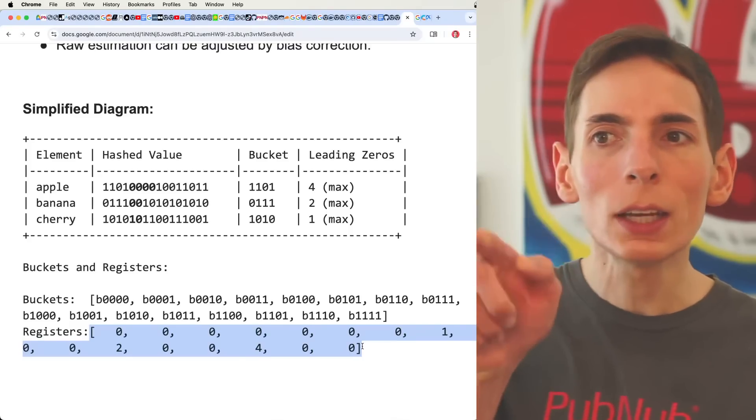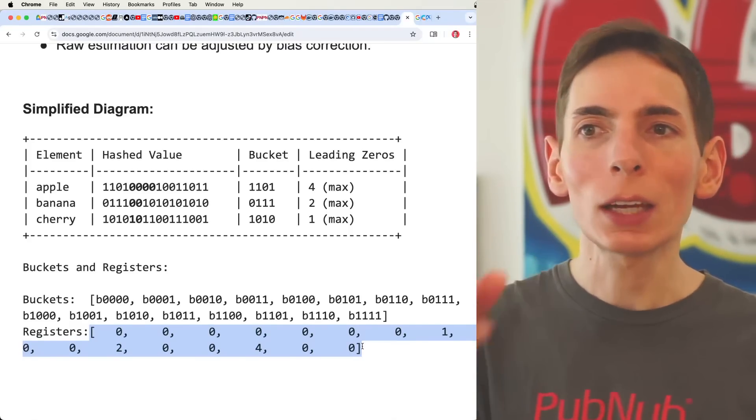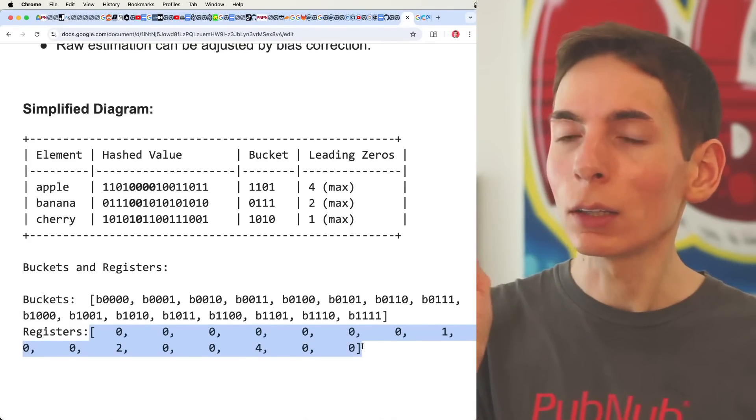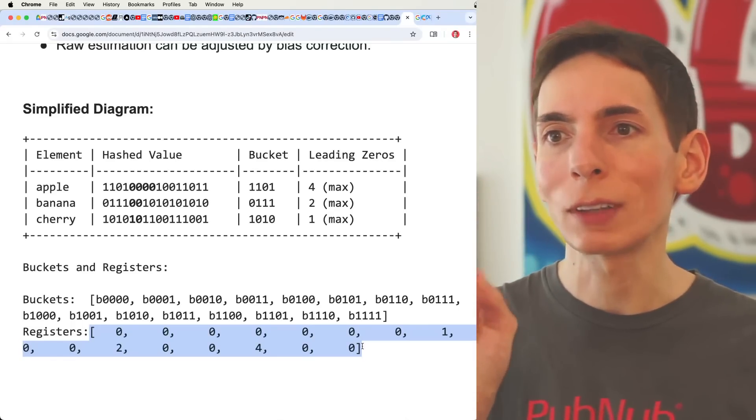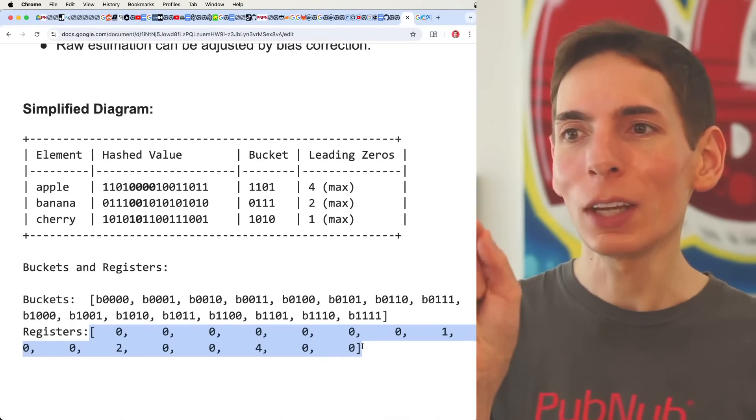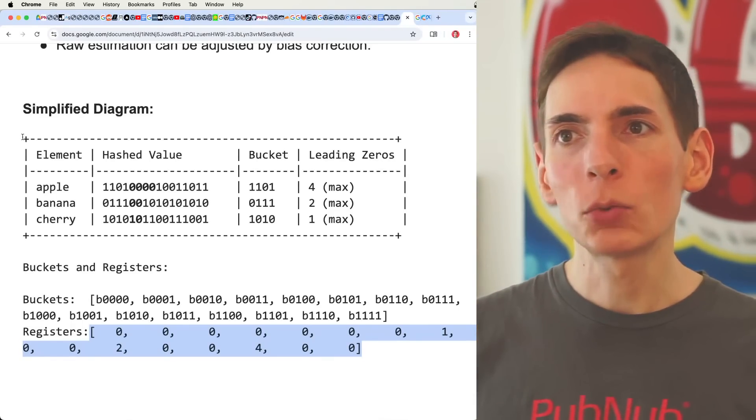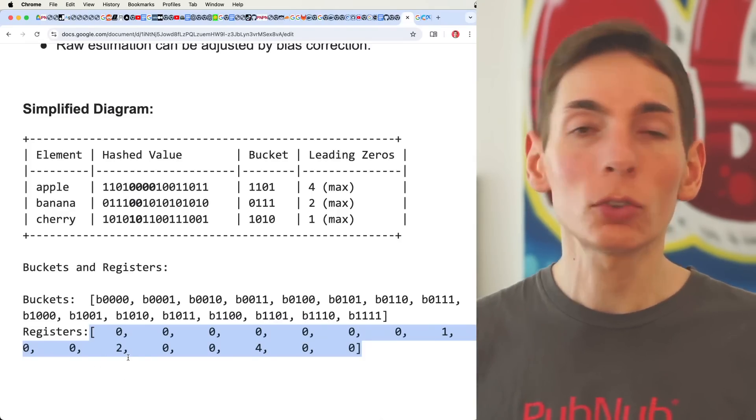So this is the only data that I've highlighted on the screen that's actually being represented in memory on a computer within the algorithm for HyperLogLog. That's it. This is what it looks like - it's an array of integers. Then as we add elements, we update this array.